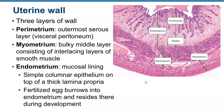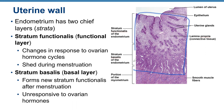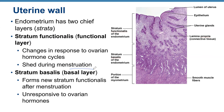The endometrium has two strata. The stratum functionalis changes in response to hormones secreted by the pituitary gland and is shed during menstruation. The stratum basalis, or basal layer, forms new stratum functionalis after menstruation and is unresponsive to ovarian hormones — hormones do not affect the structure of the stratum basalis.